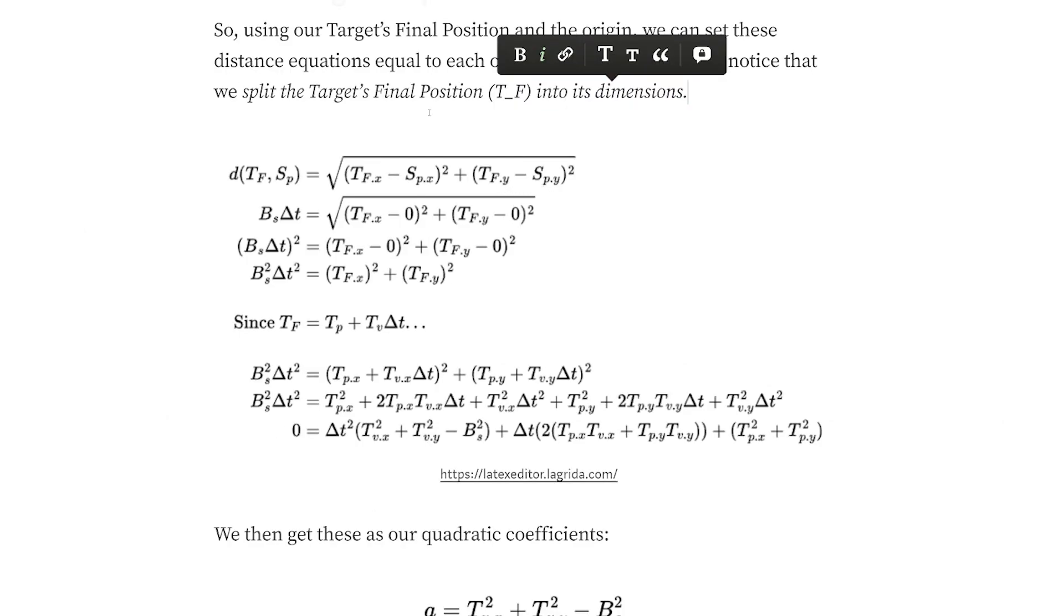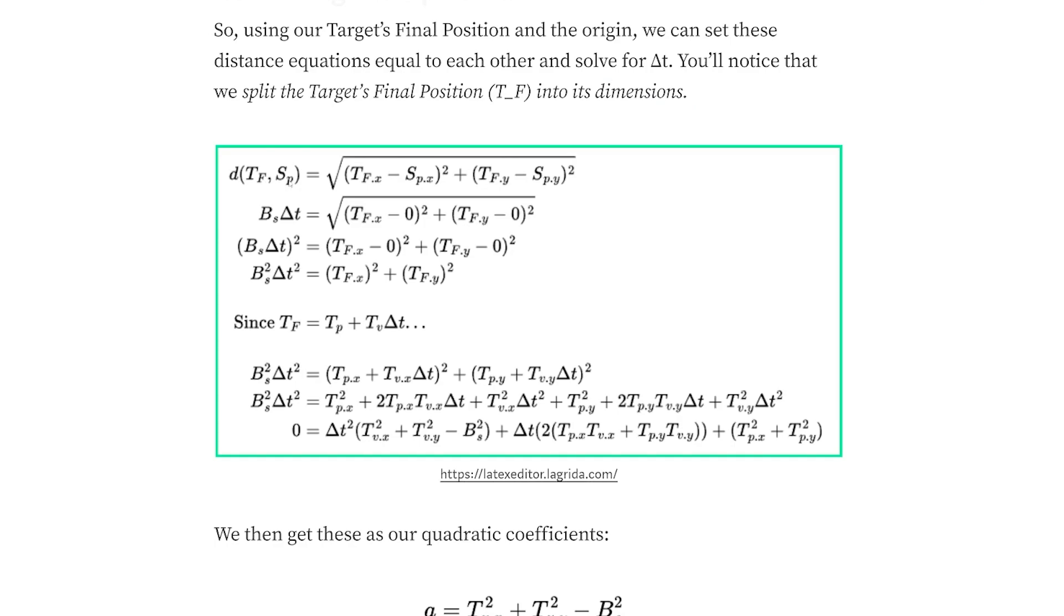First, the distance between the target's final position and the shooter's initial position is equal to the target's final X position minus the shooter's initial X position and so on. And since the shooter's zero, we're going to cancel those out and then you square both sides.